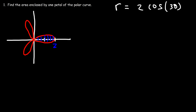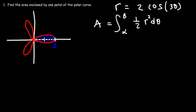So let's start with our equation. The area is the integral from alpha to beta, one-half r squared d theta. Now the issue here is finding the angles alpha and beta. How can we find those angles?